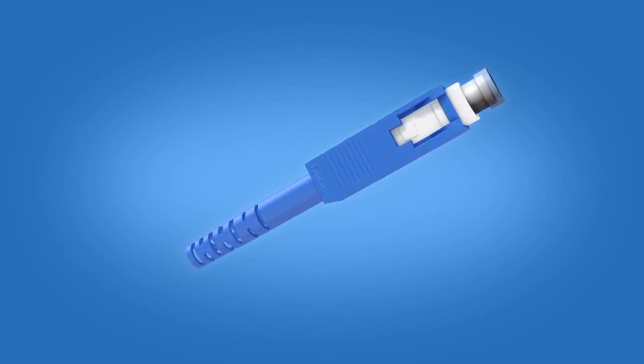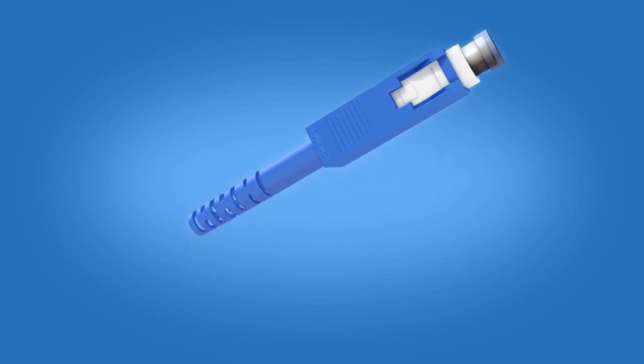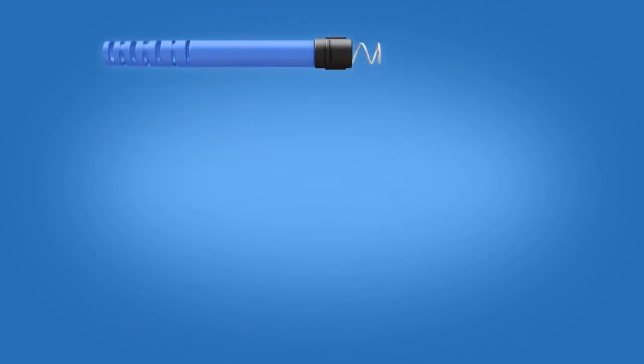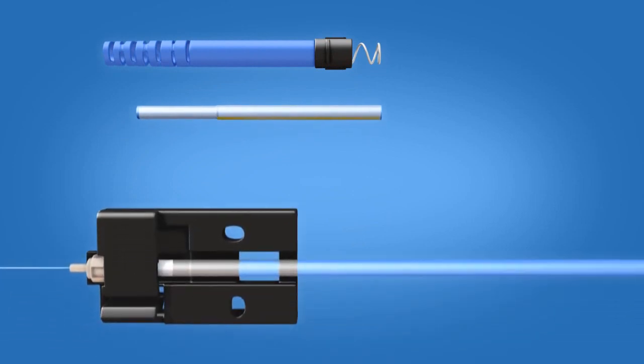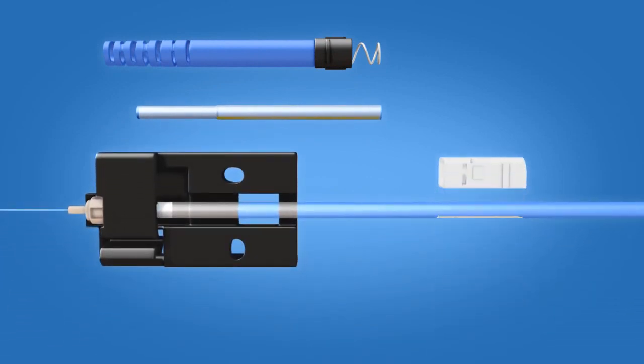The SC fuse connect connector includes the following materials: a boot unit, a protective sleeve, a ferrule unit, a connector body, connector housing, and a dust cap.